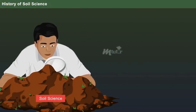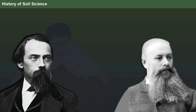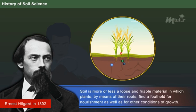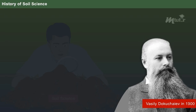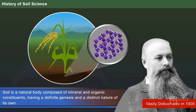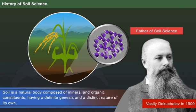Let us analyze some of the views of soil scientists upon soil. Ernest Helgaard in the year 1892 stated that soil is more or less a loose and friable material in which plants by means of their roots find a foothold for nourishment as well as for other conditions of growth. While Vasily Dokuchaev, a Russian scientist in the year 1900, quoted that soil is a natural body composed of mineral and organic constituents having a definite genesis and a distinct nature of its own. Vasily is also known as the father of soil science.